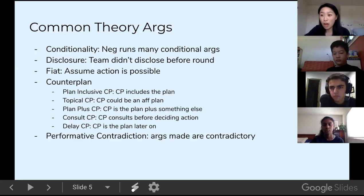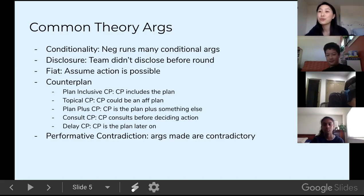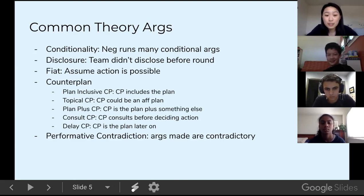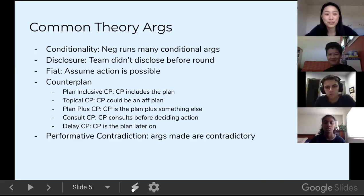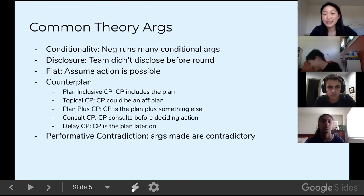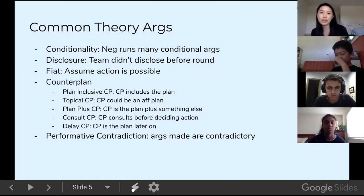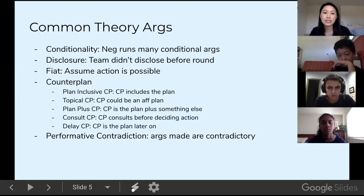On to counterplan theories — there are a lot because people start running the weirdest stuff. In policy, people create crazy arguments because the topic is year-round and they want to win in new ways. The plan-inclusive counterplan means the counterplan can include the plan — like if you and your friends are making plans to go to the Davis Creamery downtown, and someone proposes going to the Davis Creamery and also getting fries at Pluto's. It's saying: the plan is a good idea, but we should also do this other thing.